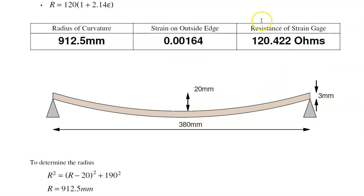So from my right triangle, I know that R squared, hypotenuse, is R minus 20 squared plus 190 squared. Solve for R. And you get 912.5 millimeters.